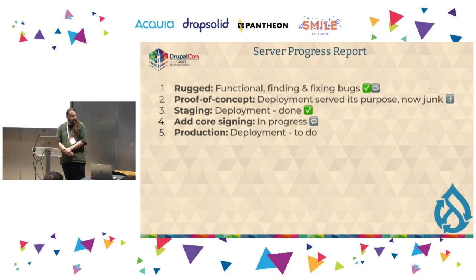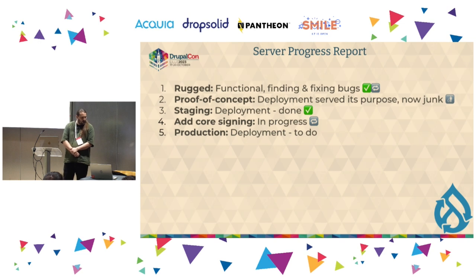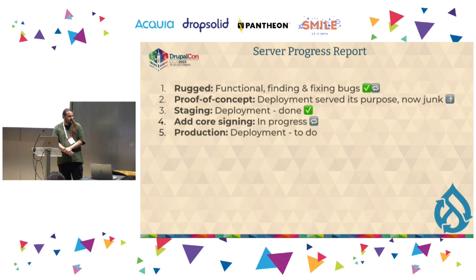We built that proof-of-concept pretty quickly and it's junk now — it was helpful in finding some bugs and getting them started, but we didn't build it in a way that was worthwhile to save. We turned around and built a staging deployment that is pretty much production quality, and so that's done. All of that was mostly for contrib. Drupal core is actually hosted on packagist.org and the downloads come from GitHub, so we don't control that part. We'll have to build a mirror of that for Drupal core to sign as well.